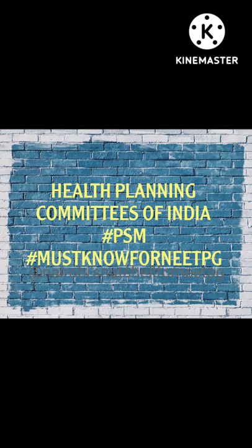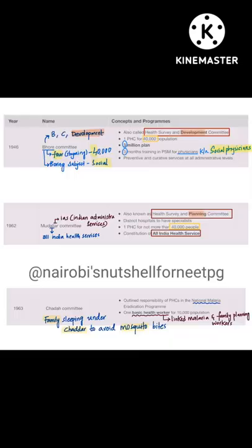Hey guys, here's the video for health planning committees of India. It's an important topic, and since most of you requested it on the Telegram group, I have chosen to make this video. The first committee is the Bore Committee. Remember it has B, C, D — Bore Committee — and D is for Development, so it is the Health Survey and Development Committee.